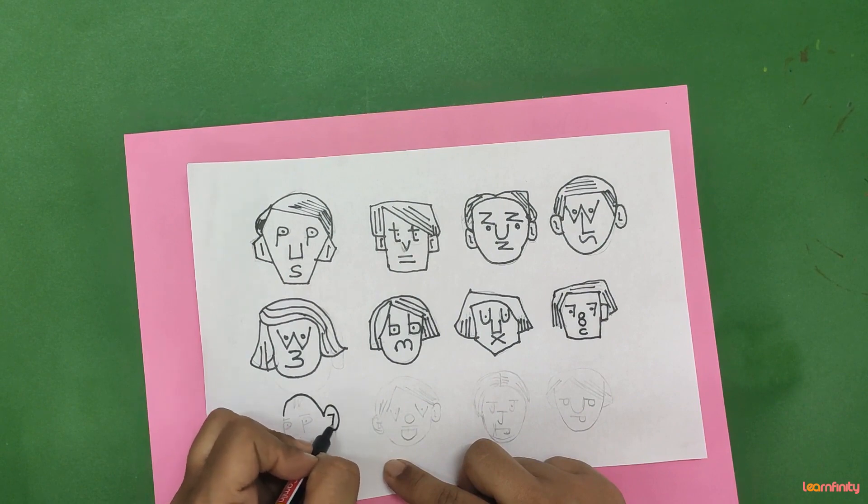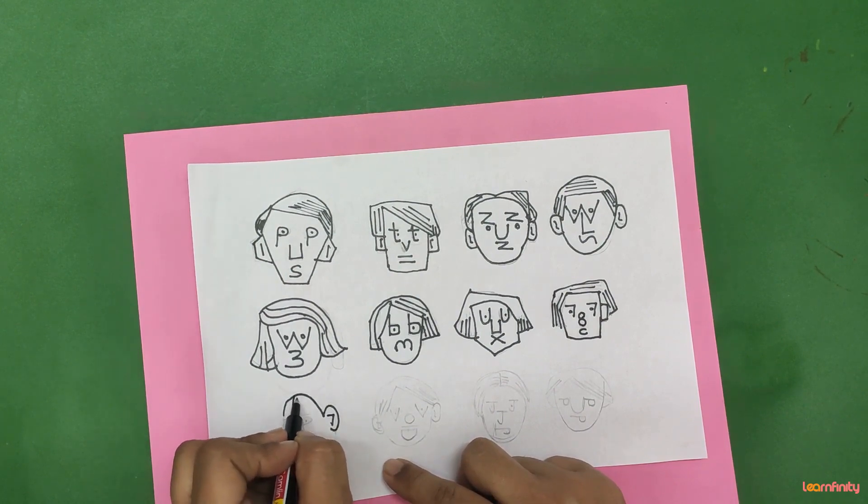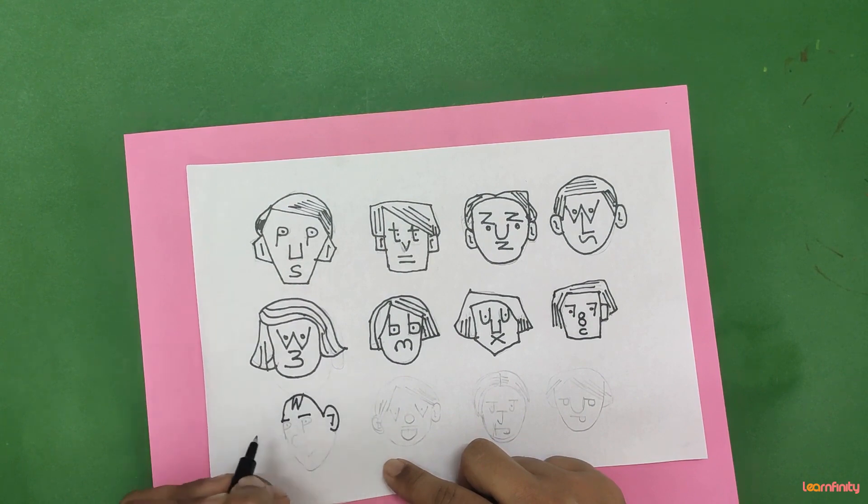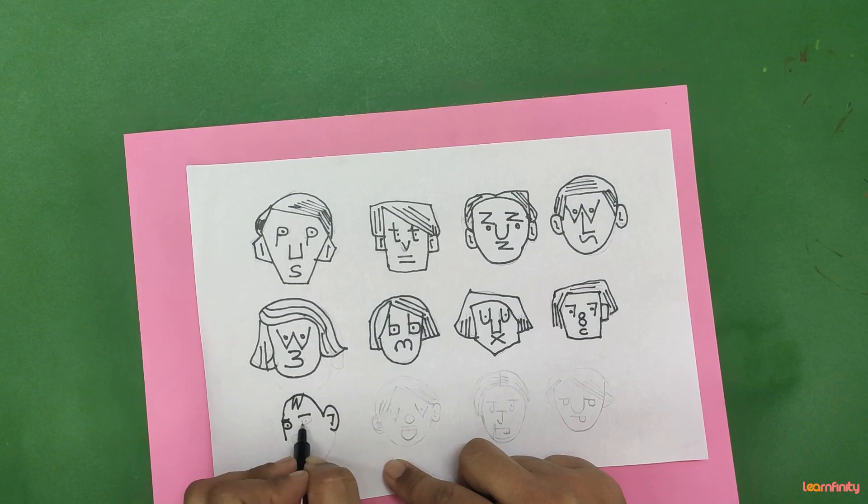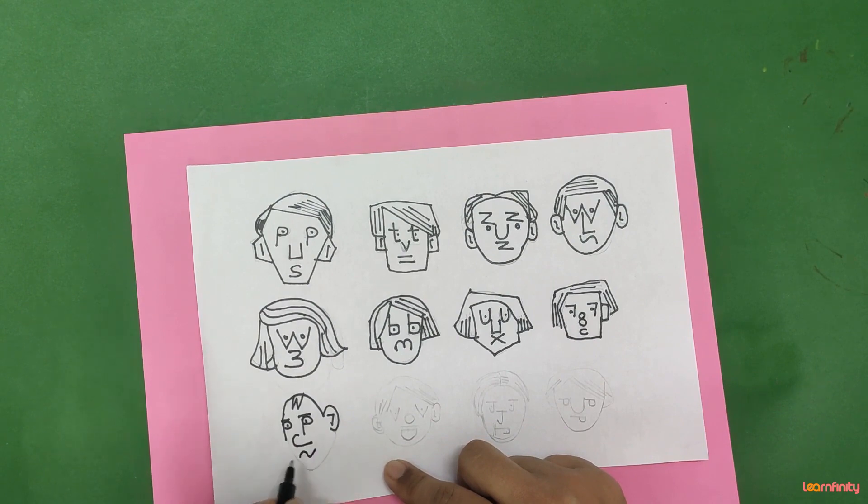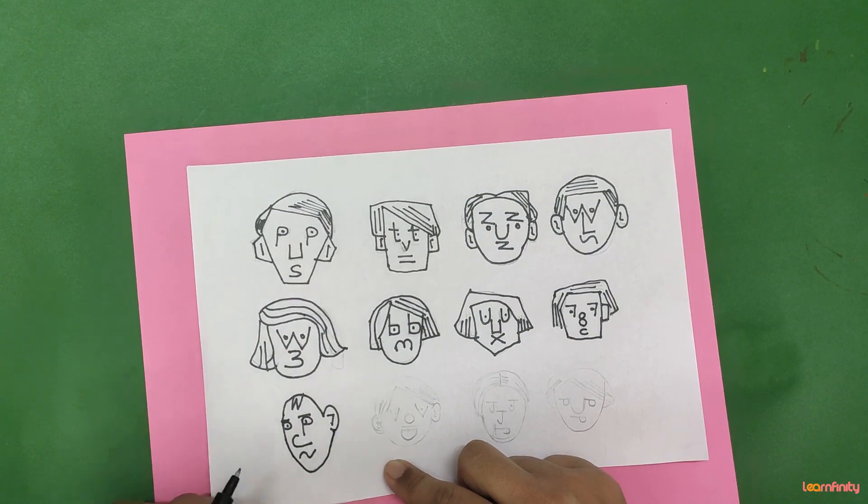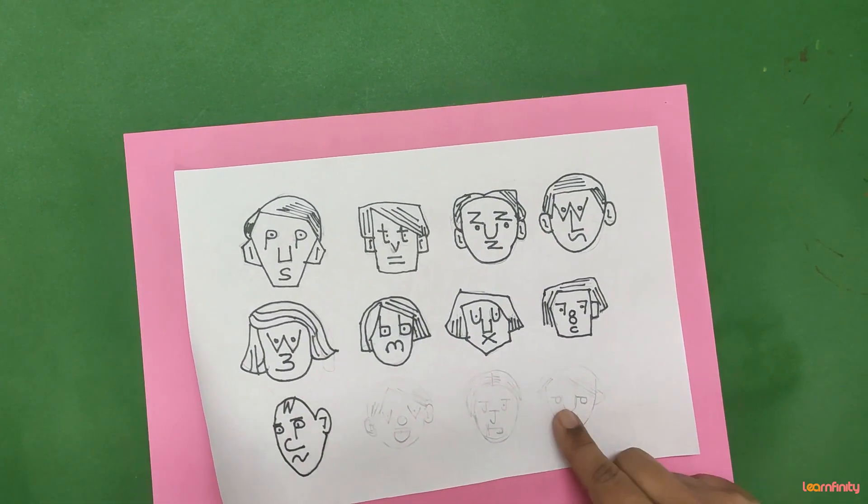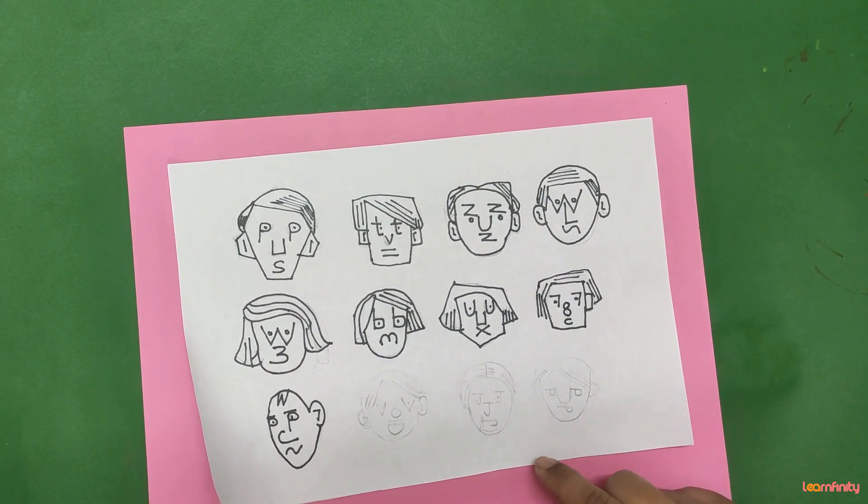Here we are drawing profile face or three phase, three fourth view. One line, two line, then P, one more P and dot, small J, zigzag for lips like this.